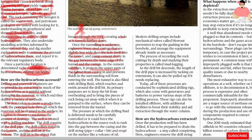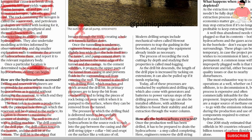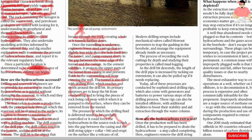How are the hydrocarbons extracted? Once the production well has been drilled, it has to be prepared to drain the hydrocarbon — a step called completing. Here, engineers remove the drill string.